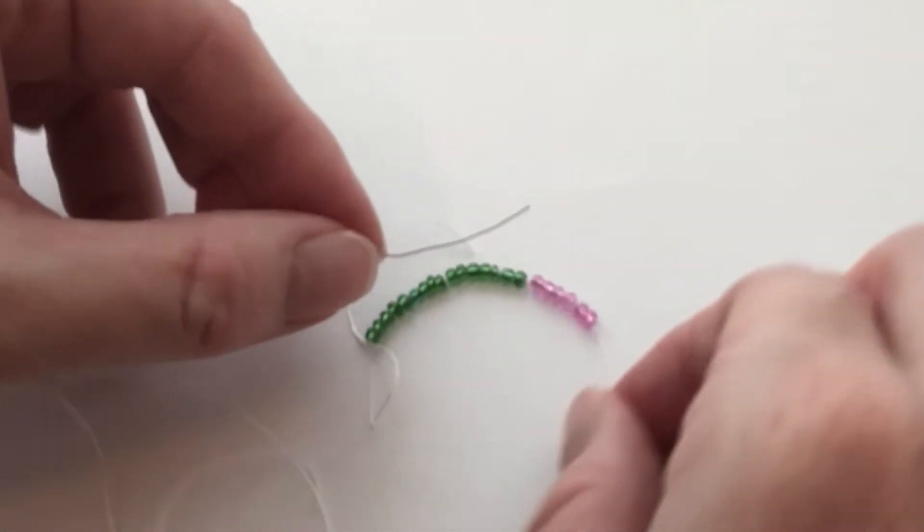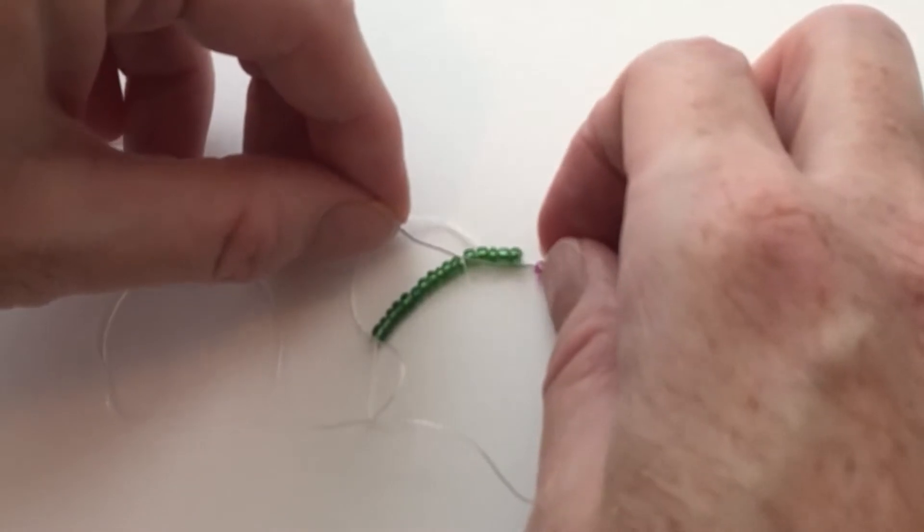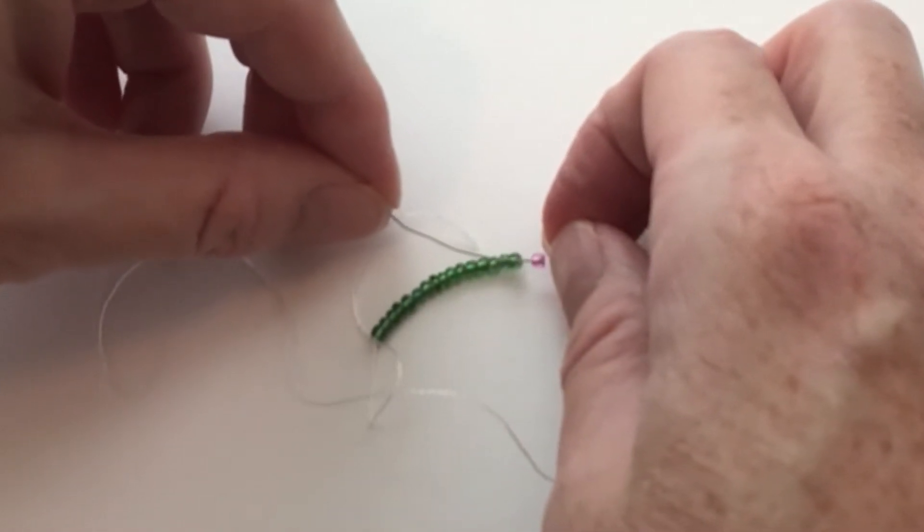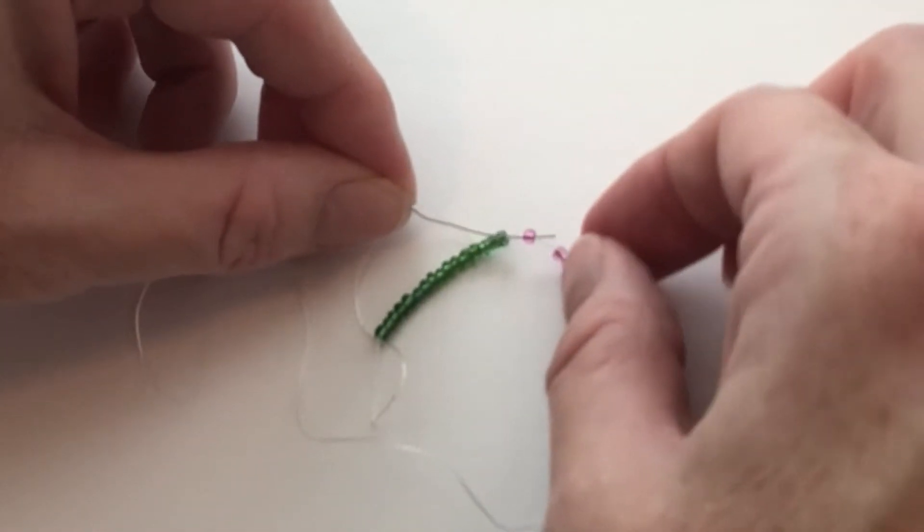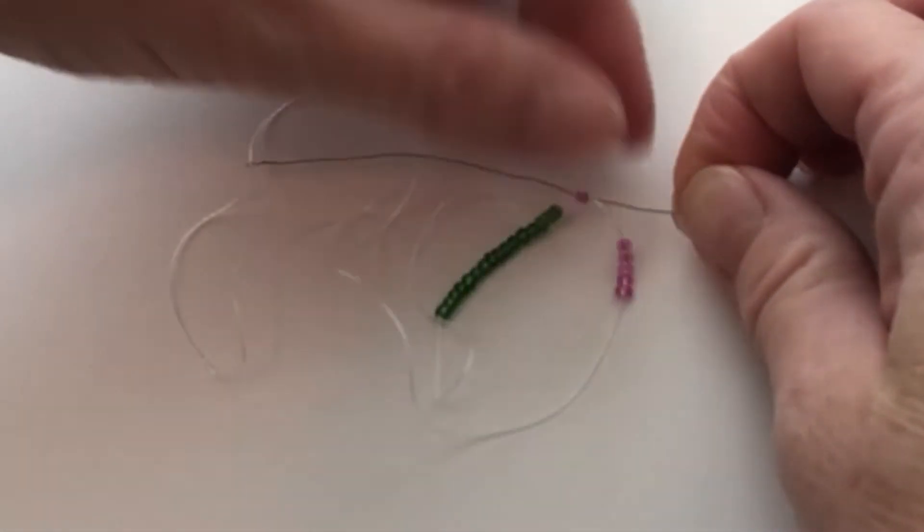Then you're going to make those beads go in a circle by threading the needle back up in the opposite direction through that first bead so that your thread circles through.